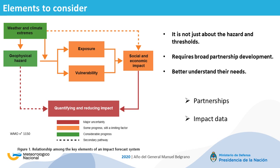The red arrow represents an approach whereby the magnitude of the likely impact is related directly from the magnitude of the meteorological hazard. In this approach, there is no account of exposure or vulnerability — only the magnitude of the hazard. It is important to highlight the need for partnerships and the availability of impact, exposure and vulnerability data. Depending on the system, the temporal and spatial resolution of impact information needed will vary.